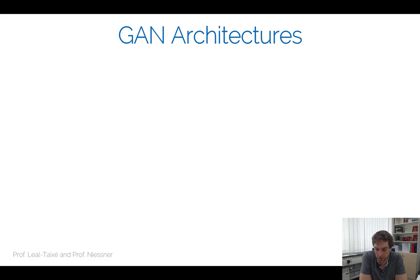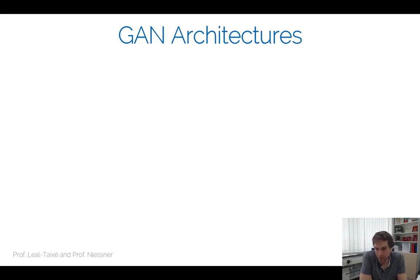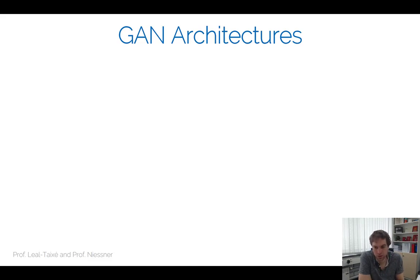We have already seen the DC-GAN, the deep convolutional GAN — a solid basic architecture and a good starting point. One important concept I want to address is how to scale GANs up to bigger resolutions. The challenge is that GANs generate local detail well, since convolutional kernels have a local receptive field, but global structure is very challenging, and this problem becomes even more difficult at higher resolutions.